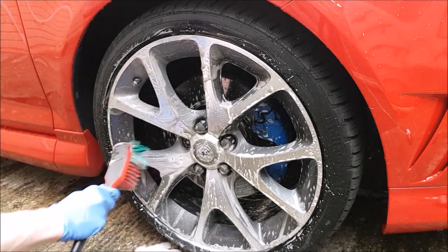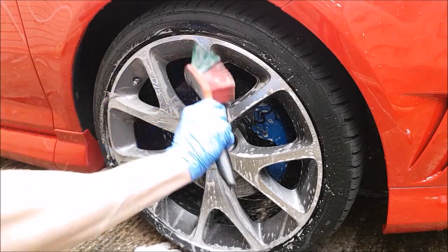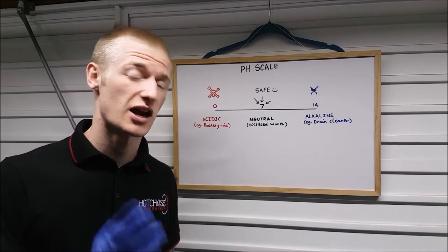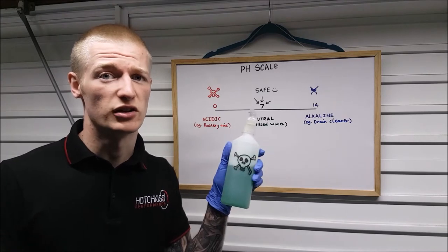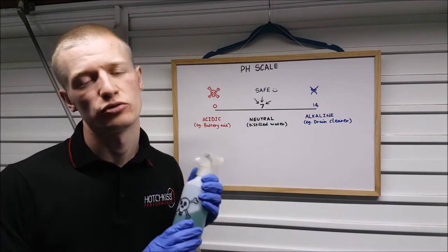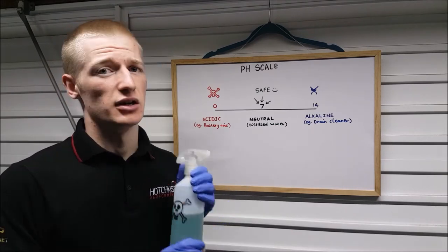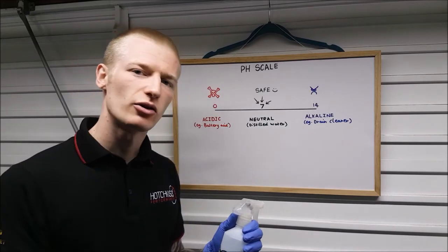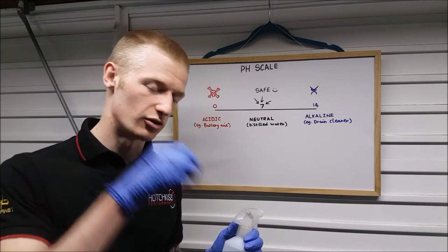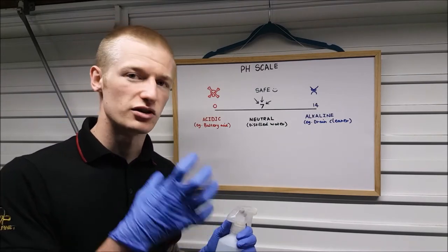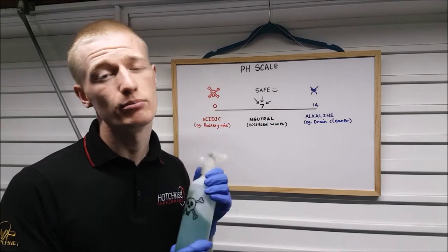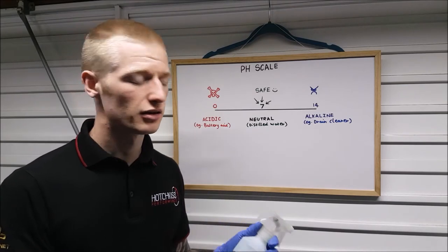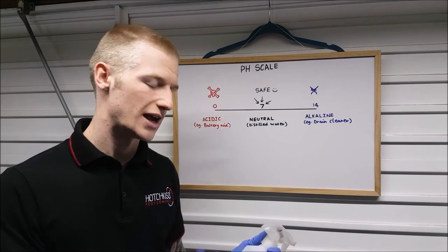You can also use a standard trigger sprayer if you prefer. If an alkaline-based wheel cleaner doesn't shift it, it's time to bring out the big guns — the acidic wheel cleaner. Again a concentrated product that you will need to dilute. These are designed for really heavy embedded contamination in the wheel that is stuck into the clear coat, to dissolve and clean it off.